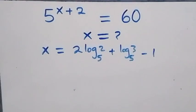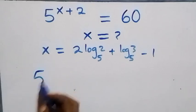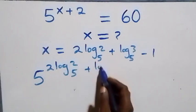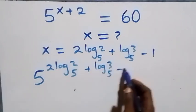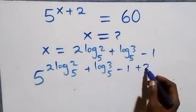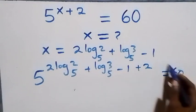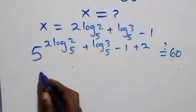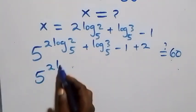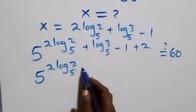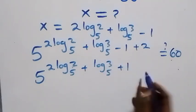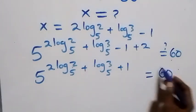What we have becomes 5 raised to the power (2 log₅2 plus log₅3 minus 1) plus 2, equals 60. Here minus 1 plus 2 gives plus 1, so this becomes 5 raised to the power (2 log₅2 plus log₅3 plus 1) equals 60.